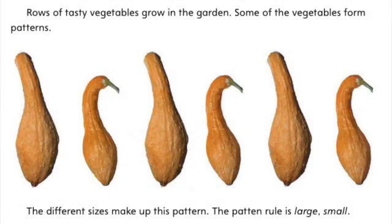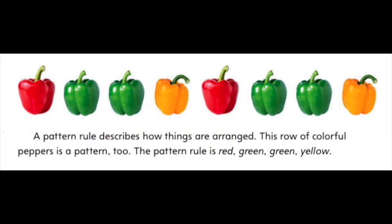Rows of tasty vegetables grow in the garden. Some of the vegetables form patterns. The different sizes make up this pattern. The pattern rule is large, small. A pattern rule describes how things are arranged. This row of colorful peppers is a pattern too. The pattern rule is red, green, green, yellow.